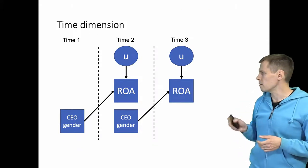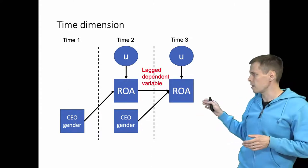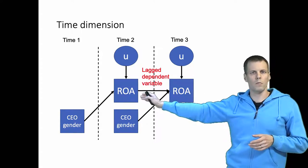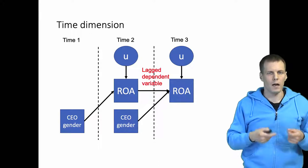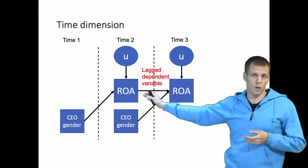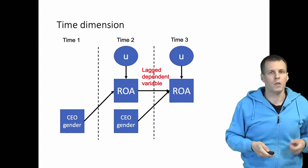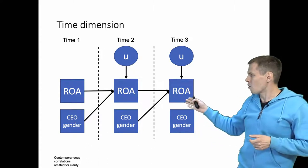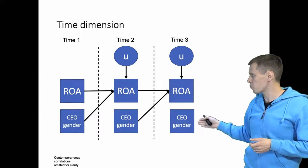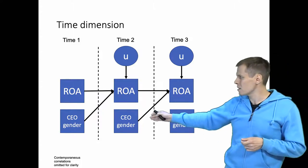But sometimes we want to do something more complicated. What if we have the scenario where ROA now affects its future value — so we have lagged dependent variables as a predictor of the current variable? This is called the dynamic panel model because the variable depends on its past values. I have a general video about lagged dependent variables that discusses whether and when you should apply this kind of relationship. Quite often we have ROA from not just time 2 and time 3, but from time 1 as well, and we probably have CEO genders at multiple time points too. If ROA persists over time, we would typically also model that CEO gender persists over time.